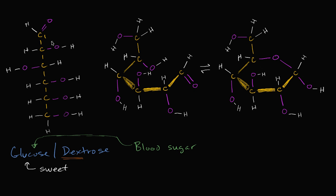Counting the carbons, we have six carbons, so the chemical formula starts with C₆. Counting the hydrogens, we have twelve hydrogens, giving us H₁₂. And counting the oxygens, we have six oxygens, giving us O₆. So the full molecular formula is C₆H₁₂O₆.